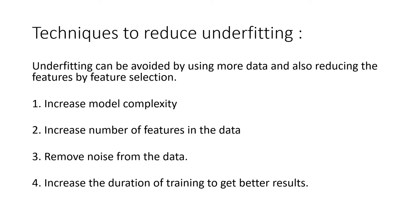If you construct a model that is very simple, there is a high possibility that underfitting occurs. So the model should be a little complex. In overfitting, we try to generalize the model, but if the complexity of the model is reduced completely, then there is a possibility of underfitting. We need to balance it. We also need to increase the number of features in the data — the training data should have enough good features, so the dataset is important.